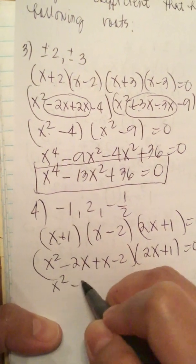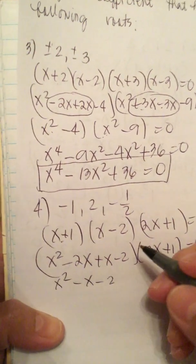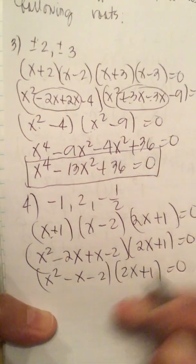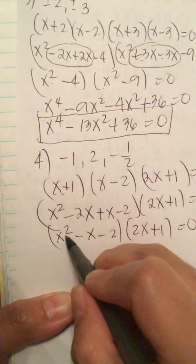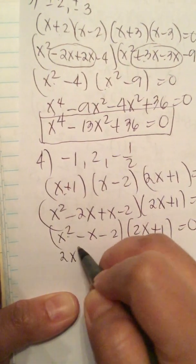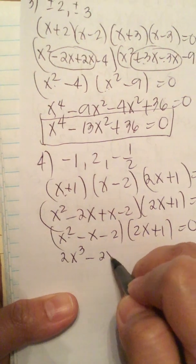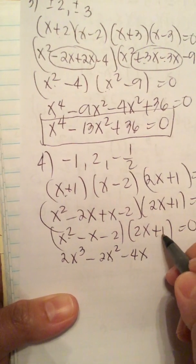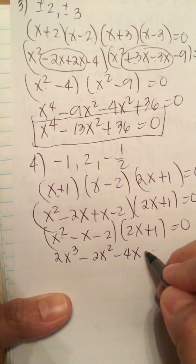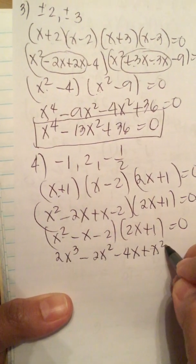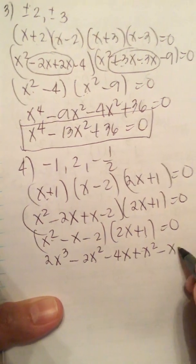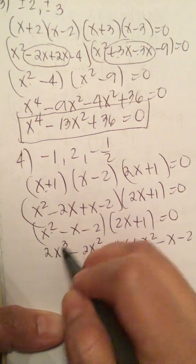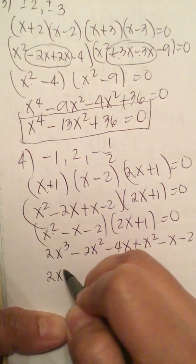We get x squared minus x minus 2, so we multiply this out: 2x cubed minus 2x squared minus 4x, and then 1 times (x squared minus x minus 2) gives plus x squared minus x minus 2 equals 0. Now we combine like terms: we have 2x cubed.